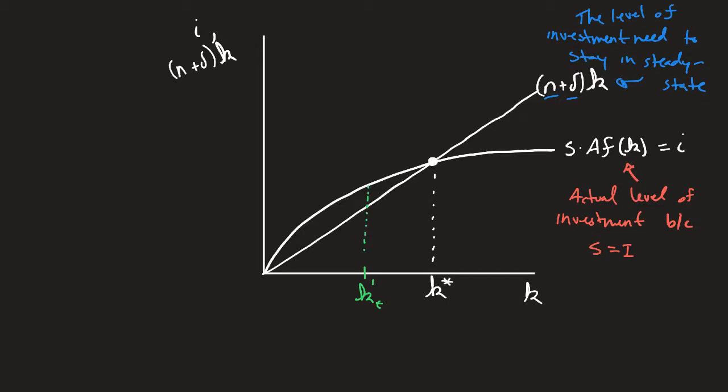So we'll just look at one way. And we go up here, and what do we notice? We notice that this point where it runs into here, this is n plus delta multiplied by this level of kt prime, which is the amount that's needed to stay in steady state.